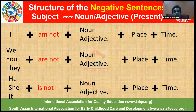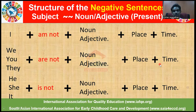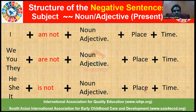The elaborate forms of the negative sentence structure: I am not, plus noun and adjective, along with place and time. We, you, they followed by aren't or are not, plus noun and adjective, plus place and time. He, she, it, plus is not or isn't, plus noun and adjective, plus place and time.